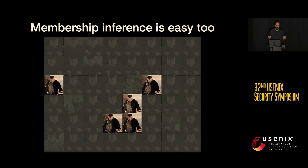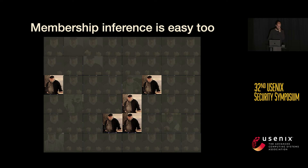The attack is very simple. We make the observation that if you prompt the model for something many times and form a graph where you put edges every time two images look essentially the same, then look for dense subgraphs — cliques in this space — what you find is mostly memorized training images.